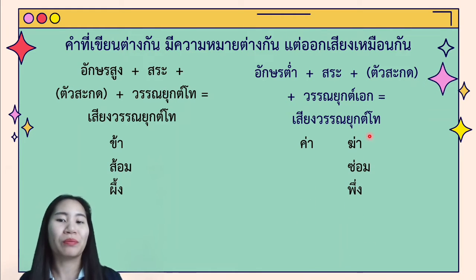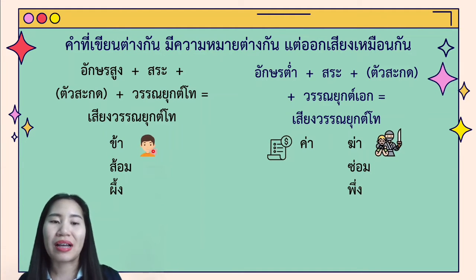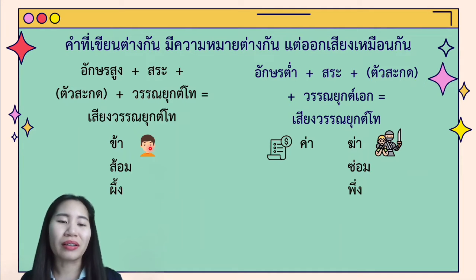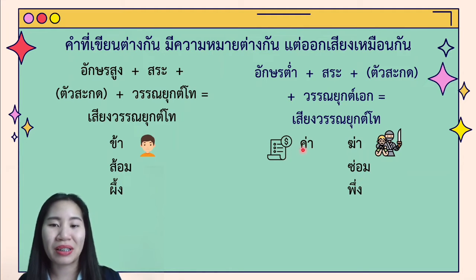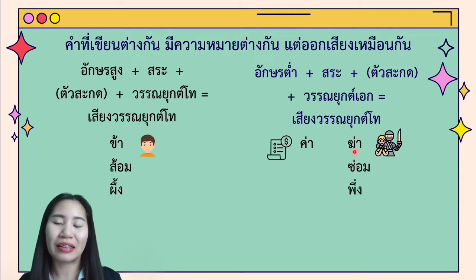Now let's see examples. The first one is the word ค่า. ค่า with high class ขอไข่ — this one means ออย, but it is an old word we don't use anymore; if you use it today it would be a rude word. ค่า also means 'I.' Now another ค่า from low class consonant, ขอควาย — this one means 'fee,' like ค่าน้ำ, ค่าไฟ. And another ค่า, คอระฆัง, means 'to kill.'